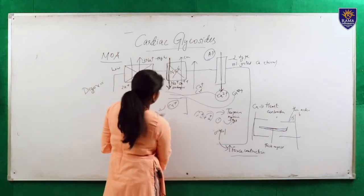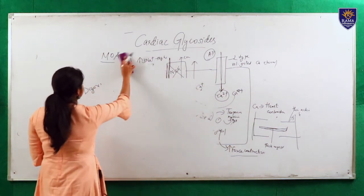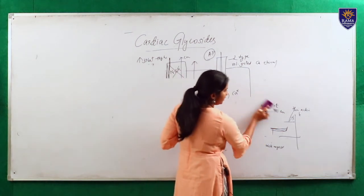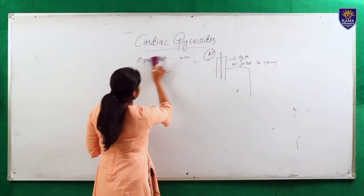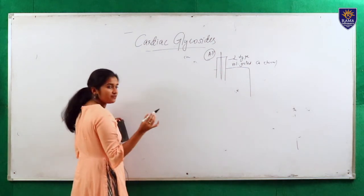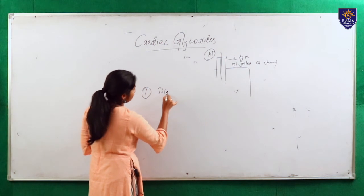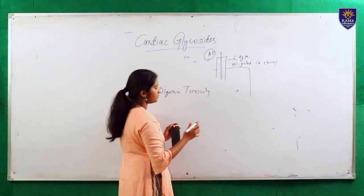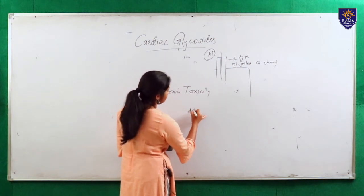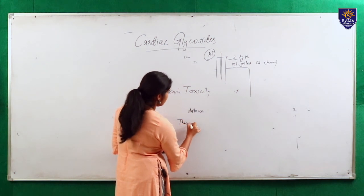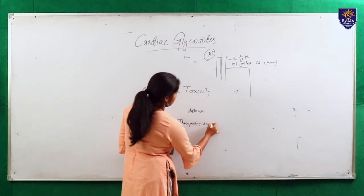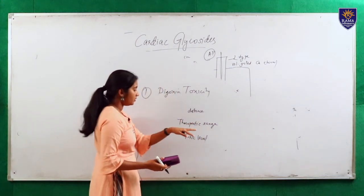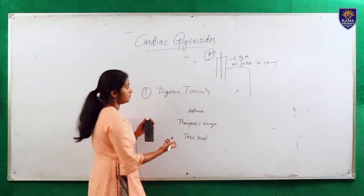We have already discussed its indications — used mainly in congestive heart failure and arrhythmias. Now, going to its adverse effects: the first main adverse effect is digoxin toxicity, because the therapeutic index of this drug is very low. The therapeutic index is the distance between the therapeutic range and the toxic level, and that distance is very low for digoxin.